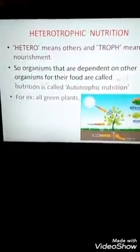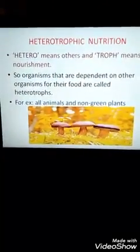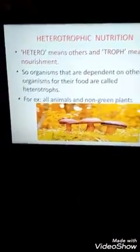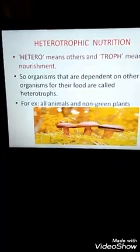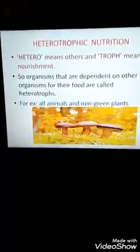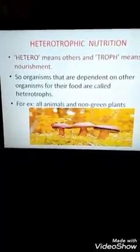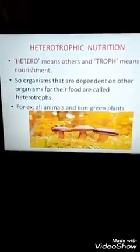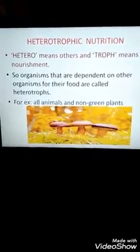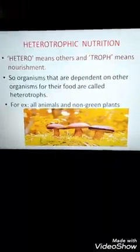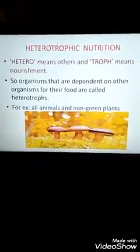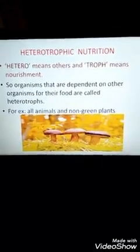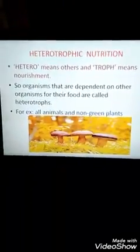The second mode of nourishment covers non-green plants. Take mushroom for example — mushroom is a type of fungus. Its color is usually black or white: the base of the mushroom is black and the top is usually white. Since it is not green in color, it does not have chlorophyll and will not be able to photosynthesize. Such plants or organisms that are not able to prepare their own food and are dependent upon either living or dead organisms for their nourishment are called heterotrophs, and this type of nourishment is called heterotrophic nutrition.